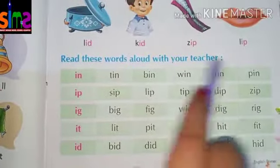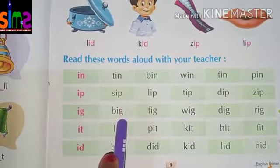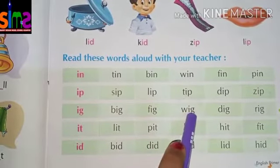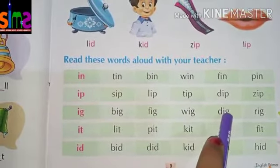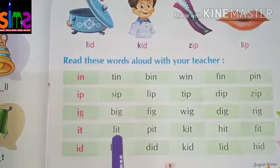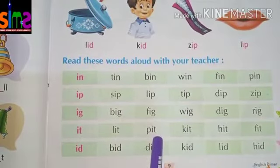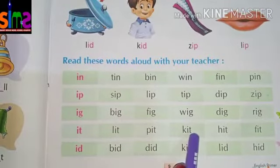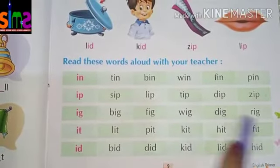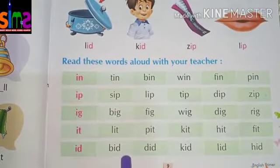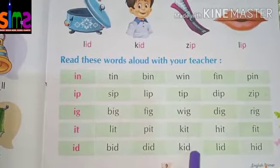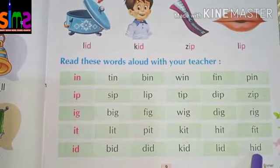Z-I-P zip. B-I-G big. F-I-G fig. W-I-G wig. D-I-G dig. R-I-G rig. L-I-T lit. P-I-T pit. K-I-T kit. H-I-T hit. F-I-T fit. B-I-D bid. D-I-D did. K-I-D kid. L-I-D lid. H-I-D hid.